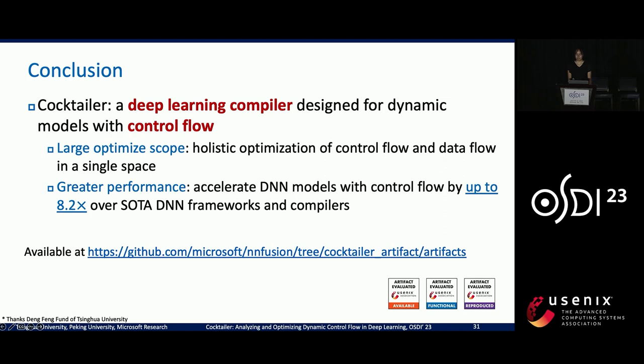In summary, our Cocktailer system is a deep learning compiler specifically designed for optimizing dynamic models with control flow. It can perform holistic optimization of control flow and data flow, and achieves up to 8.2x speedup over state-of-the-art systems. The code has been open sourced. Thanks for listening, and looking forward to questions in Q&A.